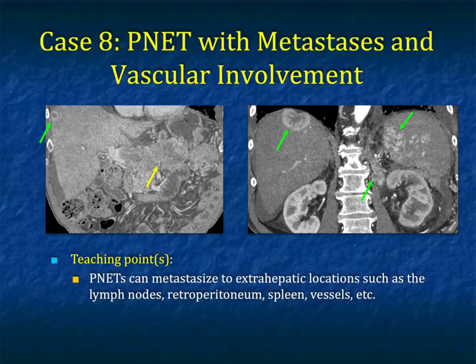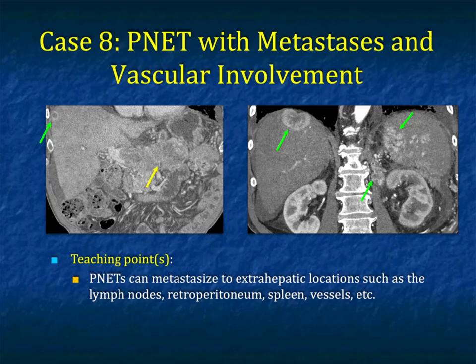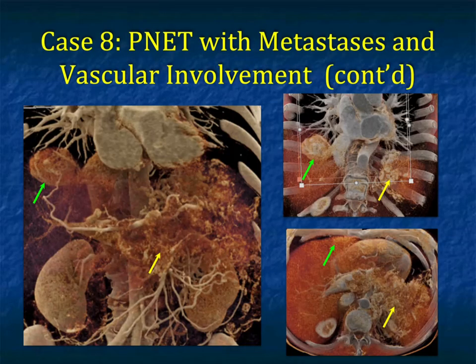Case eight: a patient with neuroendocrine tumor with metastasis. There's vascular involvement — the tumor is growing into the lymph nodes, the retroperitoneum, the spleen, the portal vein, the splenic vein, and SMV. You can very nicely see the multiple vascular metastases. Cinematic rendering defines the neovascularity, the tumor, and the extensive vascular extension by the splenic vein, portal vein, and SMV — very nicely shown, particularly on the right-side image.